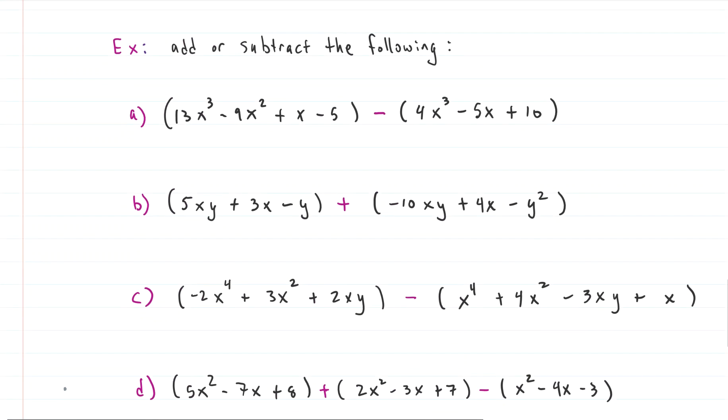Let's add. We have four different examples here. Let's add these polynomials together. And then you guys should be certified graduates of the Fruit Academy. Let's see. Our first one, a. We have 3x cubed minus 9x squared plus x minus 5. That's the first polynomial. And we're subtracting the polynomial 4x cubed minus 5x plus 10.